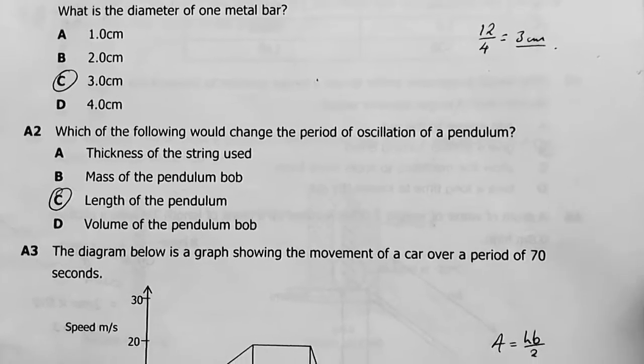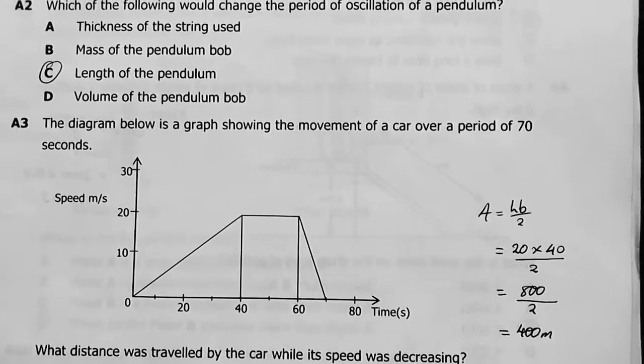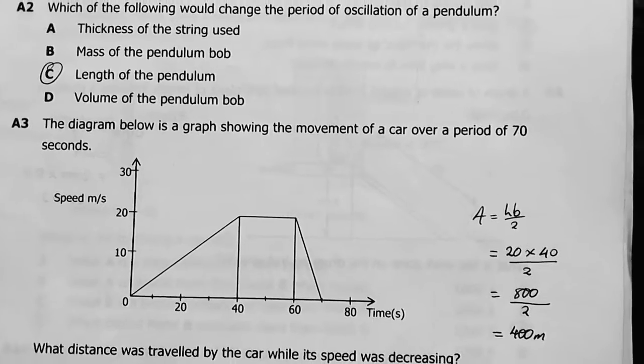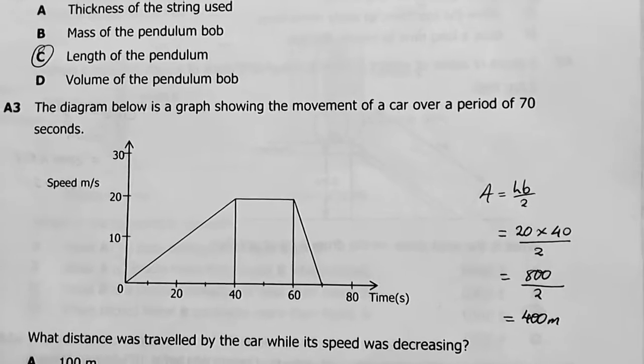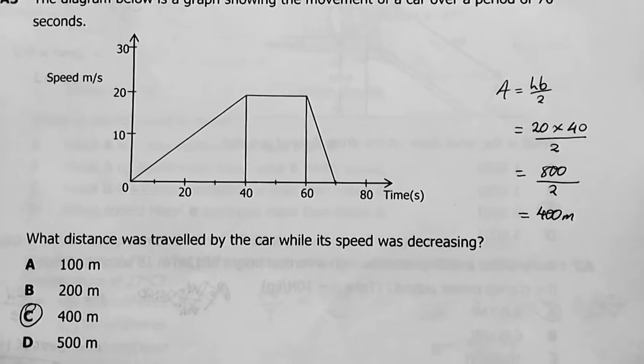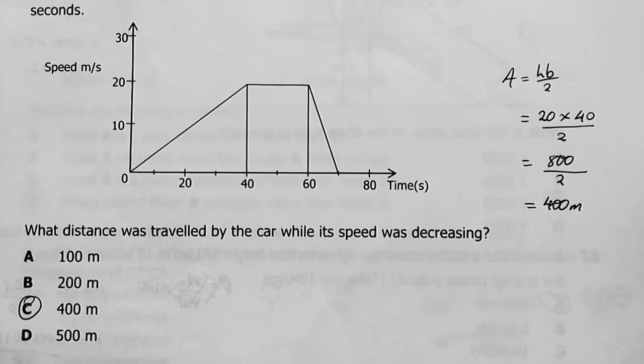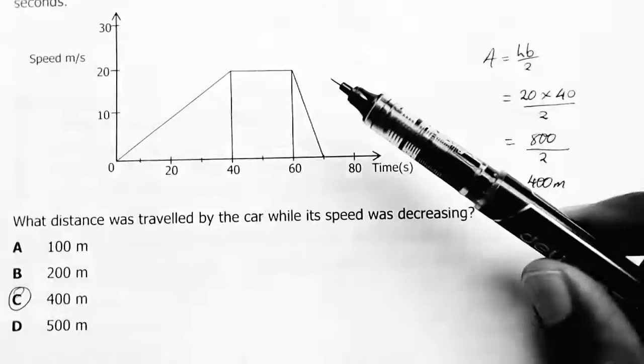Question 3: The diagram below shows the movement of a car over a period of 70 seconds. What distance was traveled by the car while its speed was decreasing?